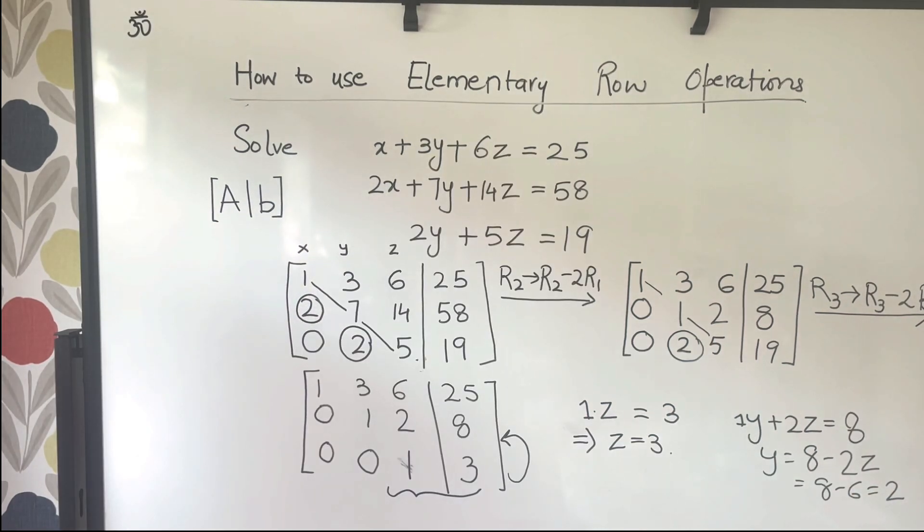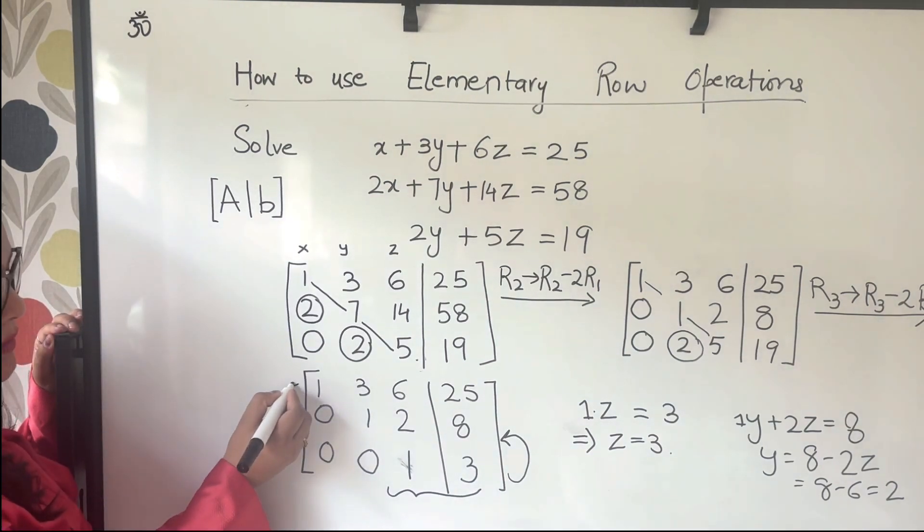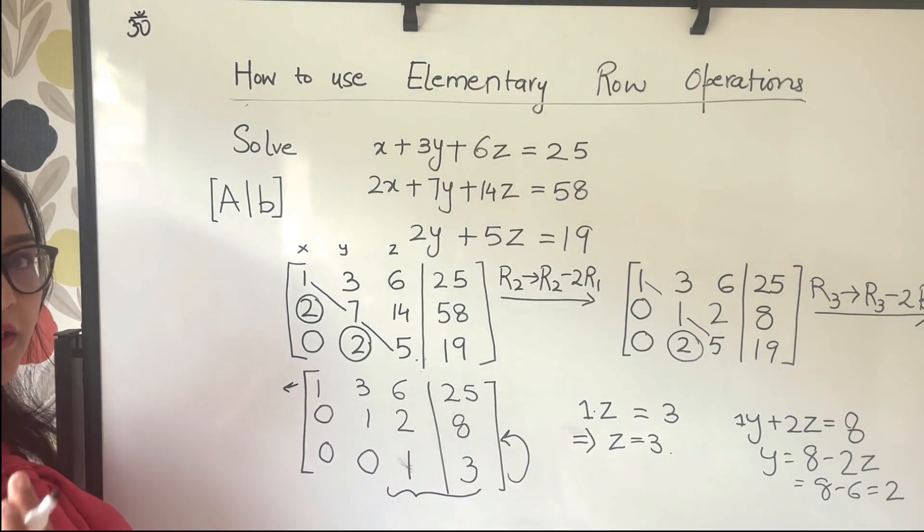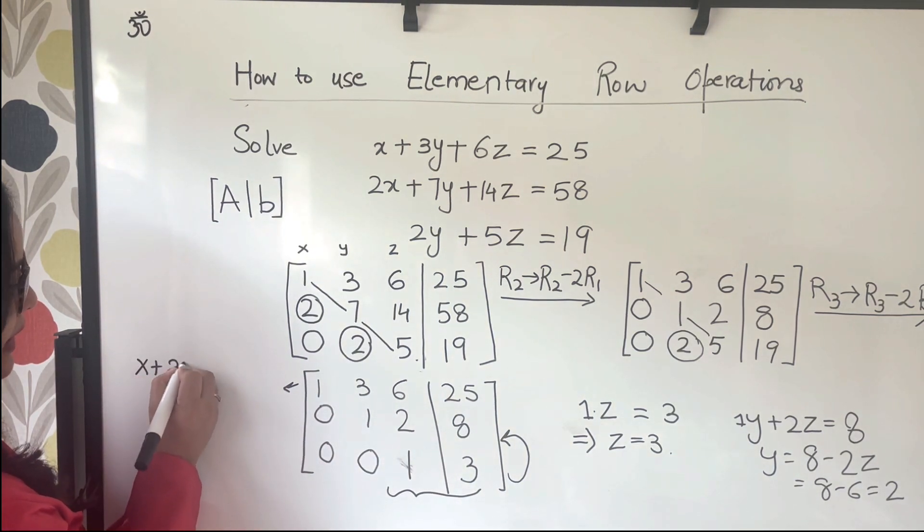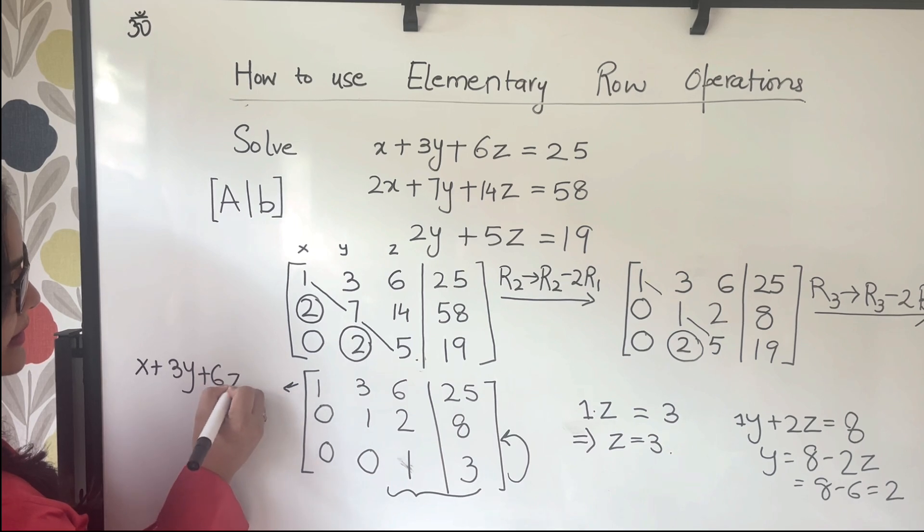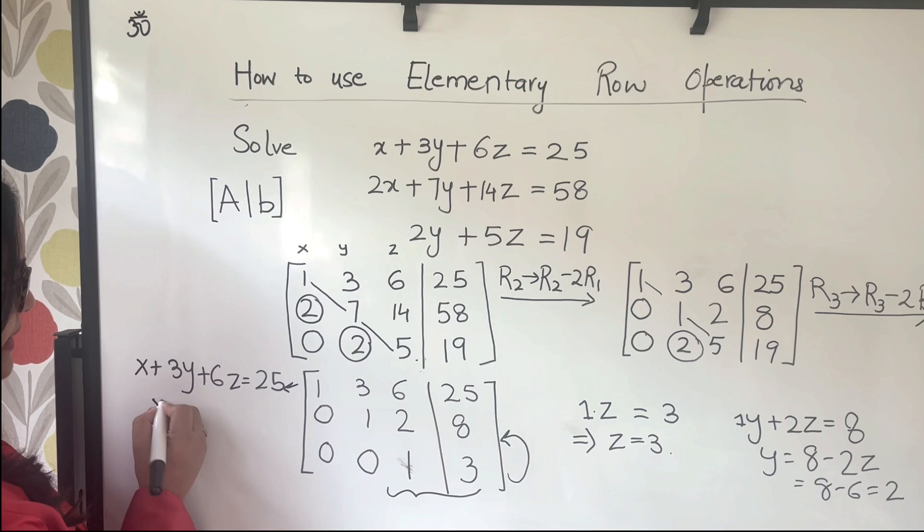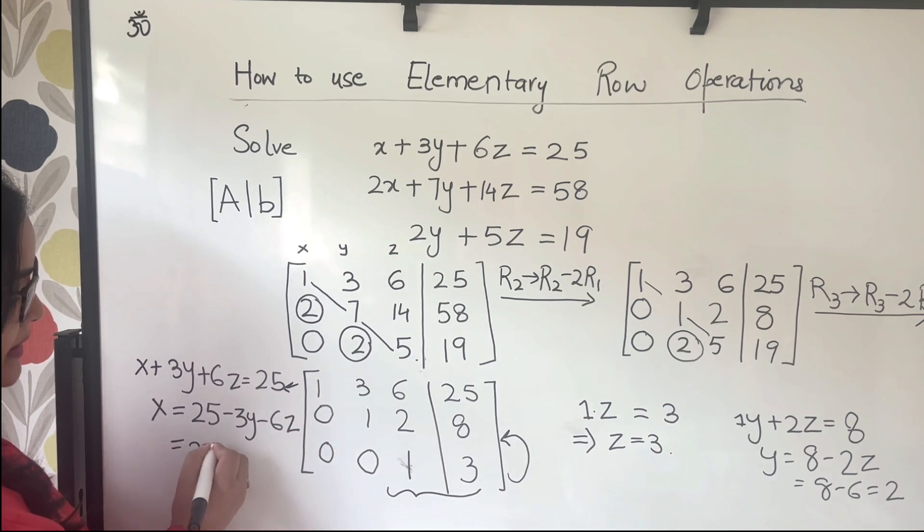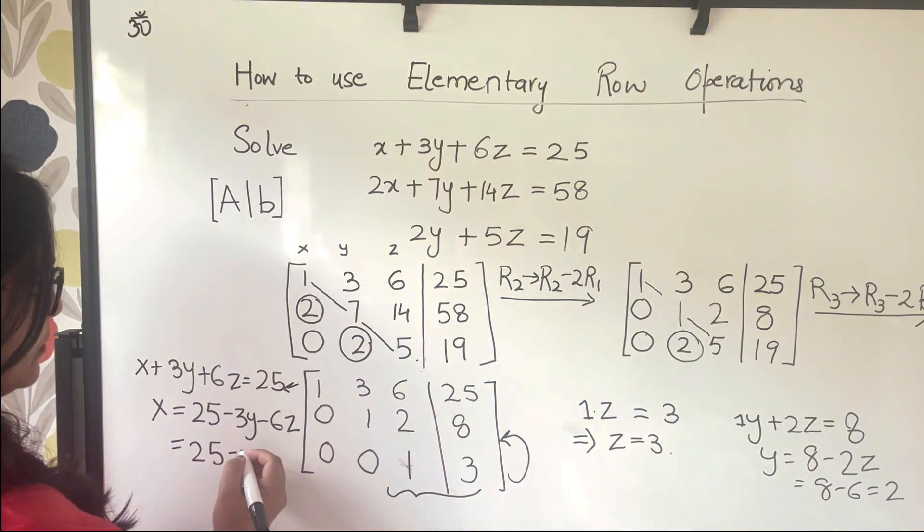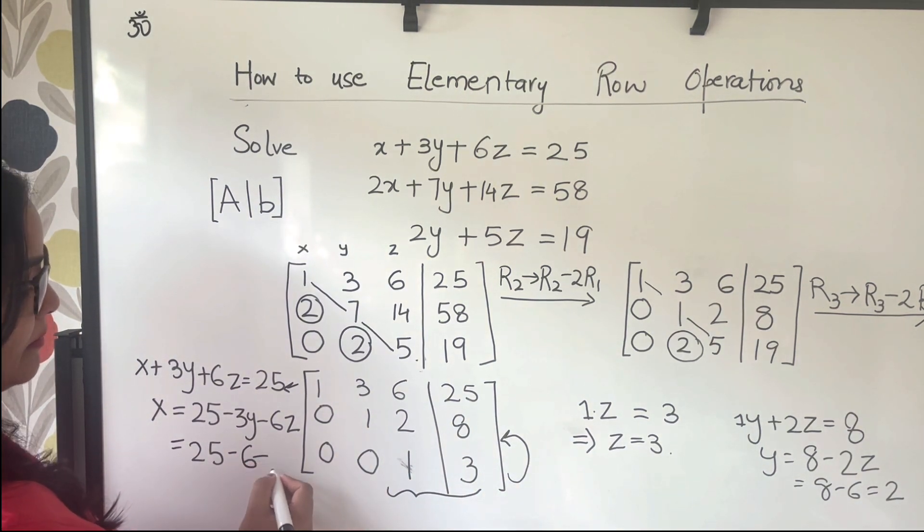And finally, what you can do is come to the first equation, come to the first row, write it down as an equation. x plus 3y plus 6z is equal to 25. Hence, what you get is that x is equal to 25 minus 3y minus 6 times z, which means it is 25 minus 6 minus 18.